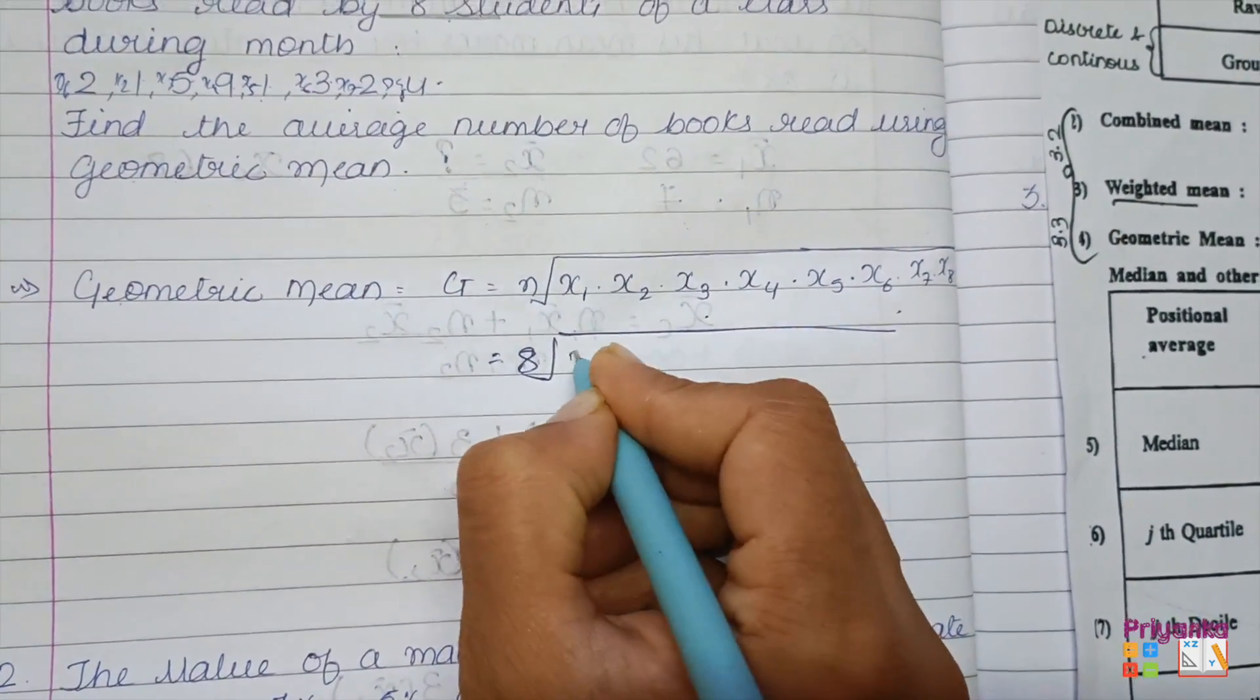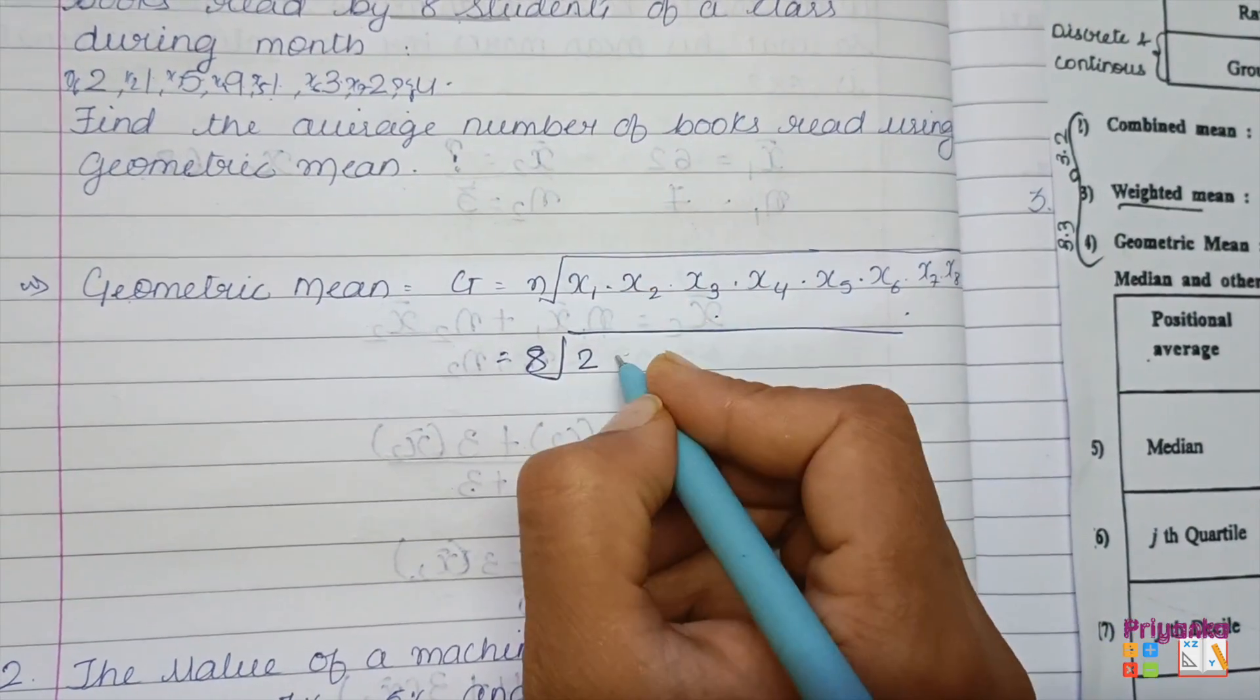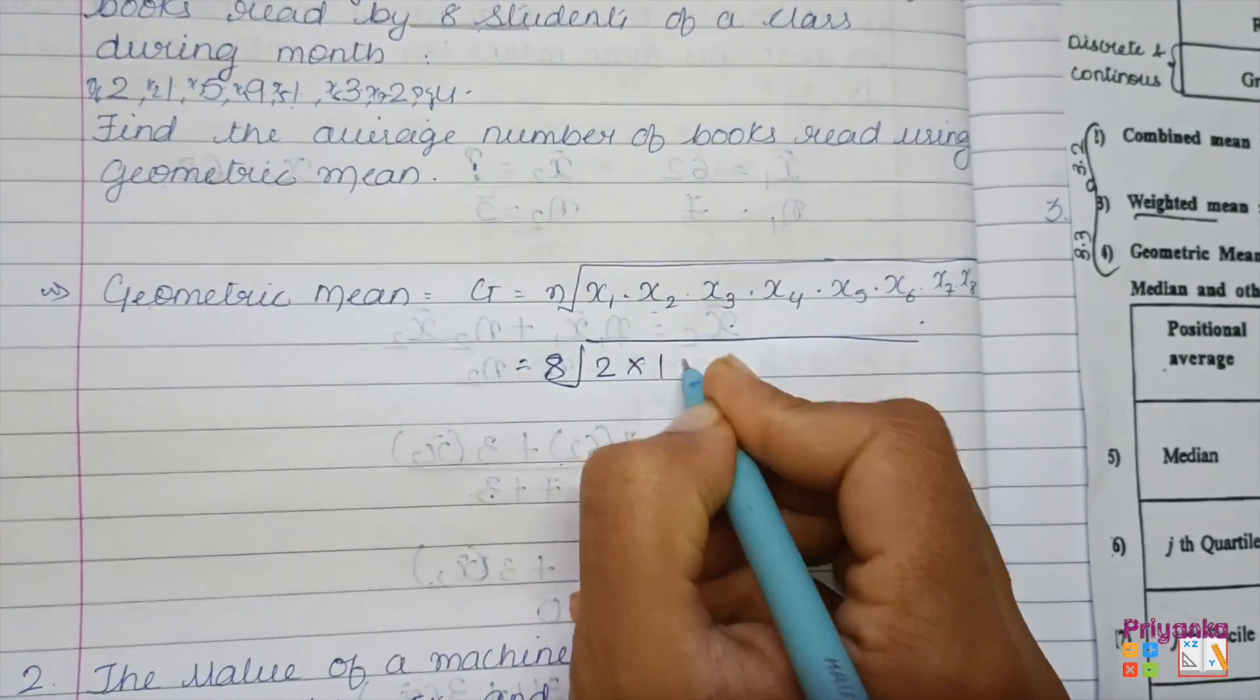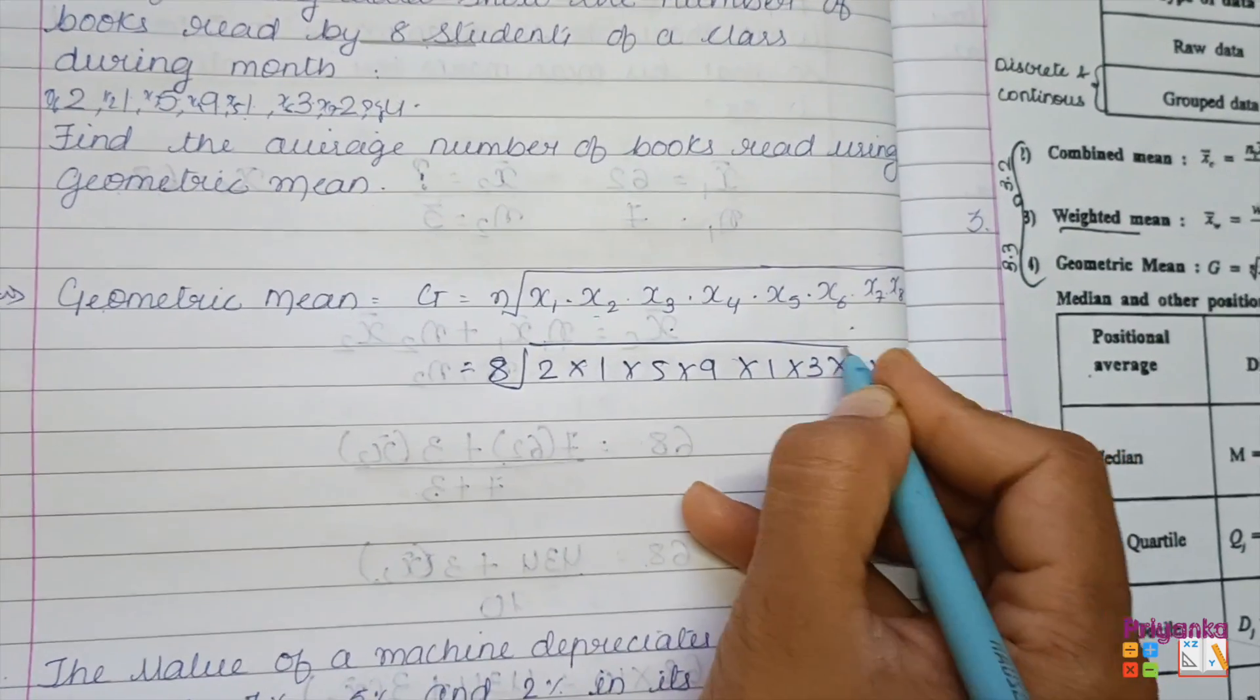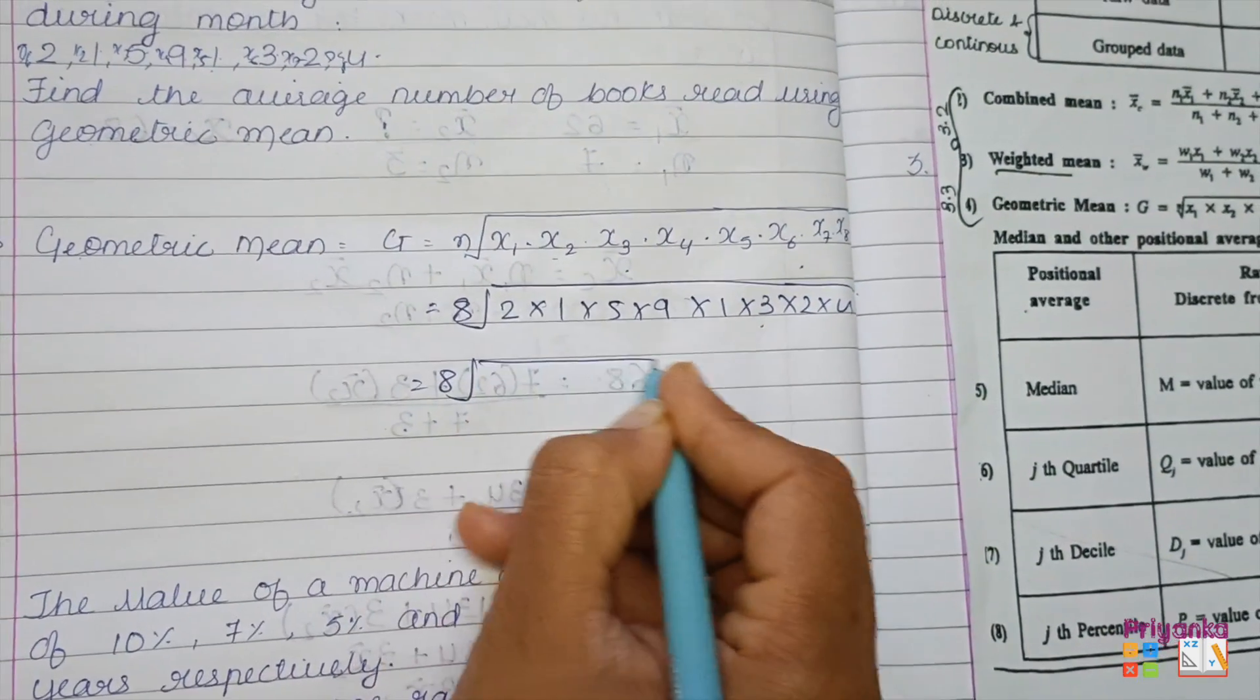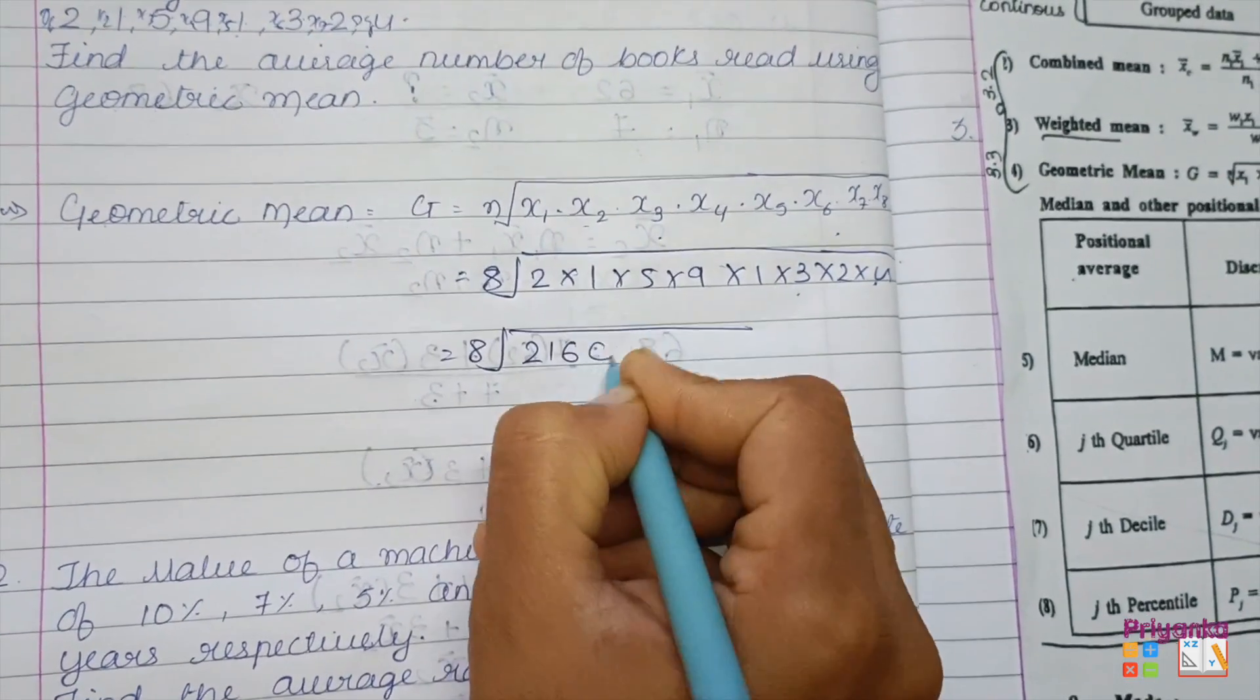Which is given in the question: x₁ is 2, and that has to be multiplied - the dot means multiply. x₂ is 1, multiply by 5, multiply by 9, 1, 3, 2, and 4. After this, get all these numbers under root. Multiply them all; you will get 2160.